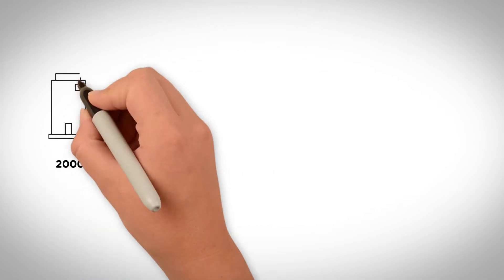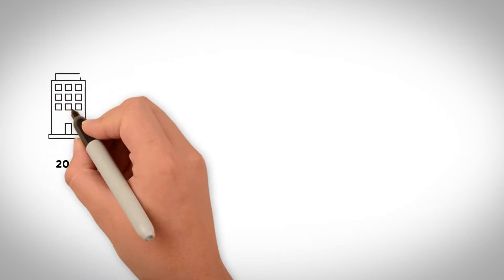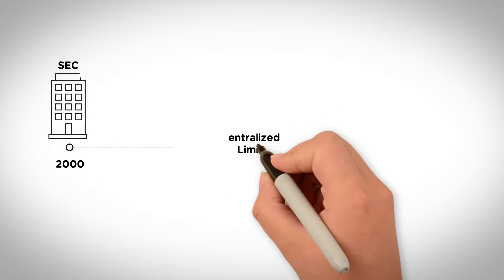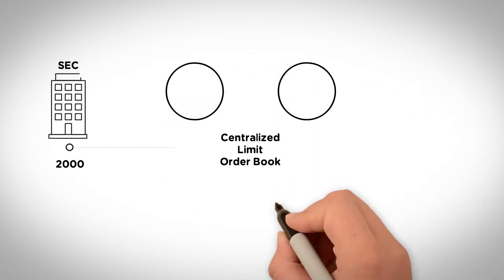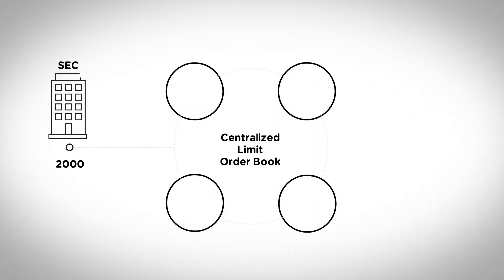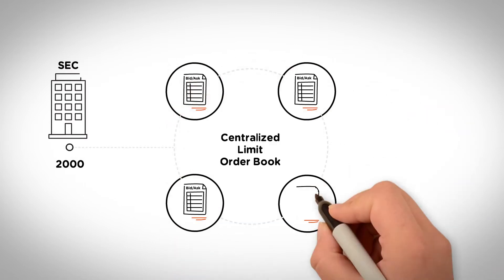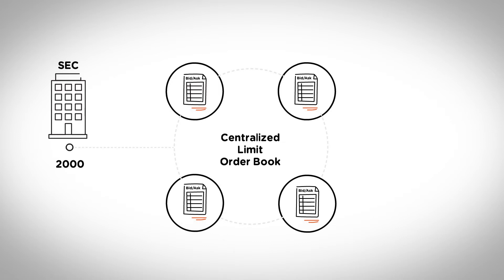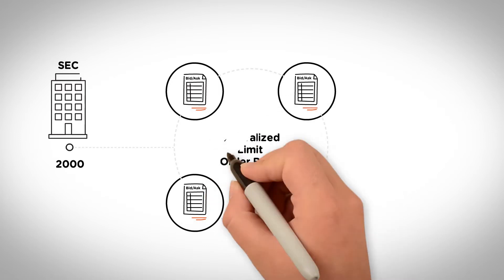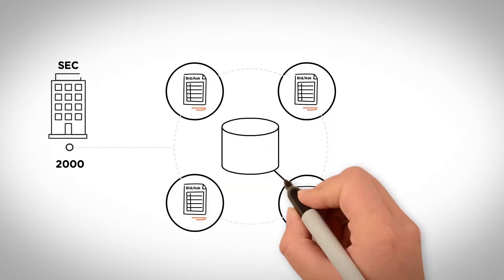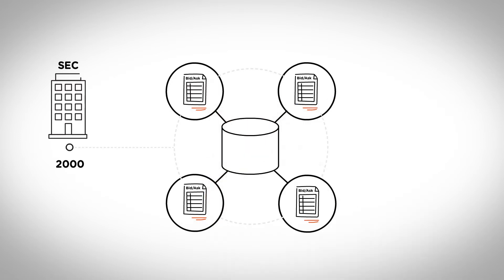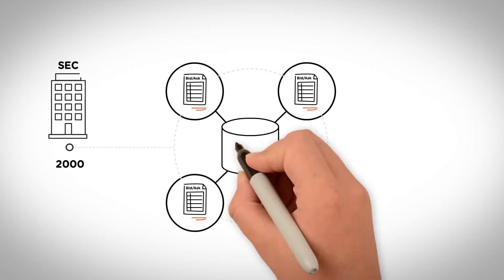In 2000, the Securities and Exchange Commission began to create a centralized limit order book that keeps track of limit orders on exchanges electronically. This electronic order tracking system automatically matches the execution of the best possible pair of orders in the system.